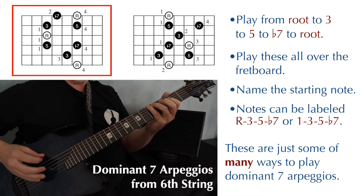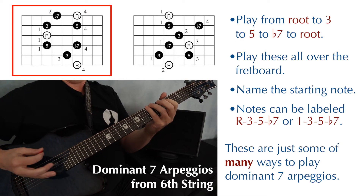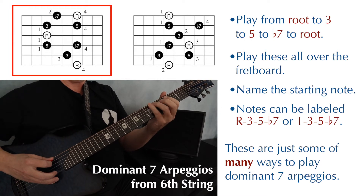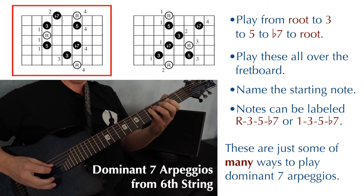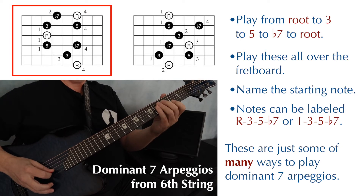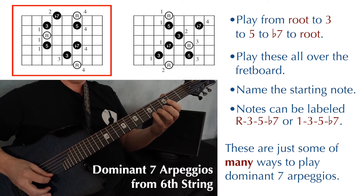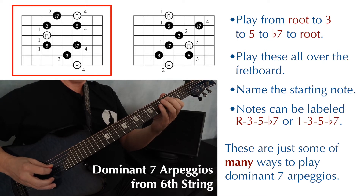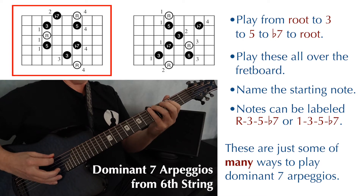And we can call those by their function. The roots you can either label as one or just call them root. Starting from the beginning, that would be root, three, five, flat seven, root, three, five, flat seven, root. And back the other way: flat seven, five, three, root, flat seven, five, three, and root.